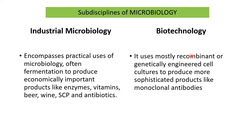Now, what is the difference with biotechnology? Biotechnology uses mostly recombinant or genetically engineered cells — meaning something is altered in that particular microbe; it is not a wild type. That particular culture is then used for production of sophisticated products like monoclonal antibodies or insulin, where recombinant E. coli is used for insulin production.